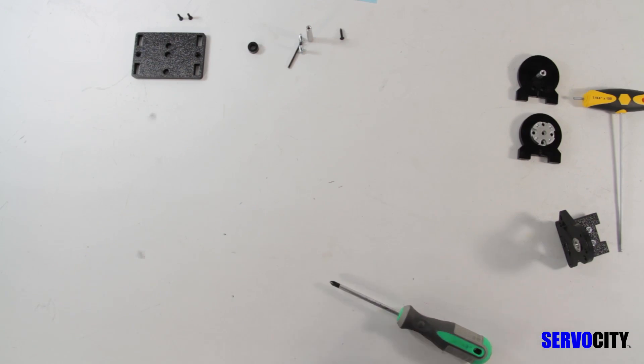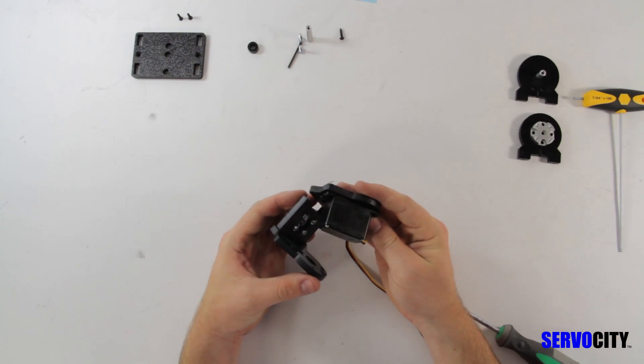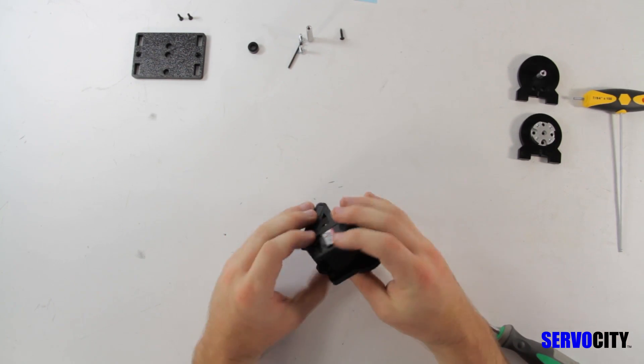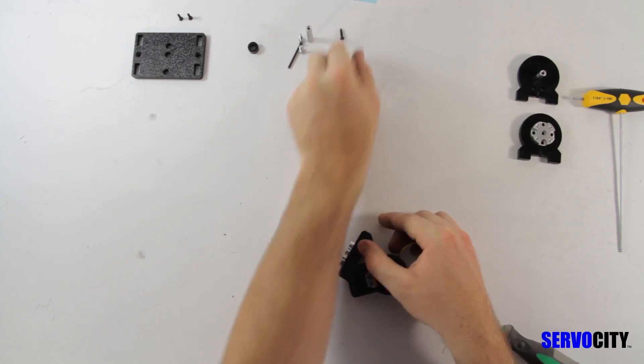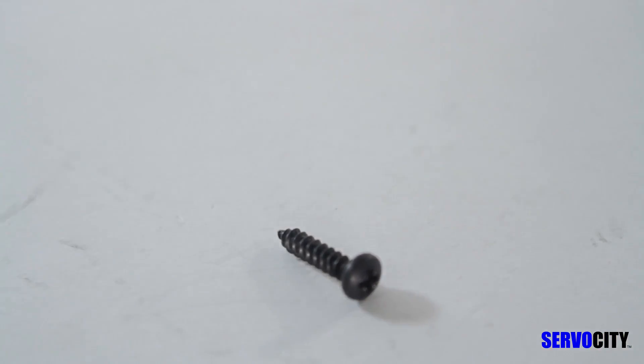Next, you will attach this piece to the other side of the H-shaped ABS plate so that the servo is facing in. Again, you will use the black 1.5 inch pan head screw.